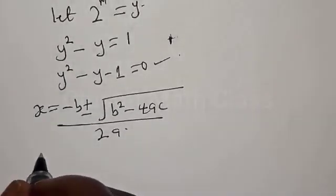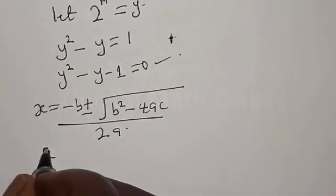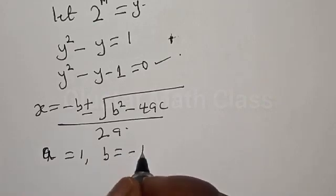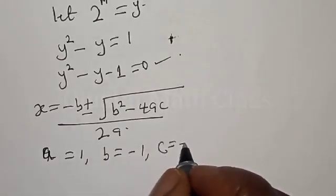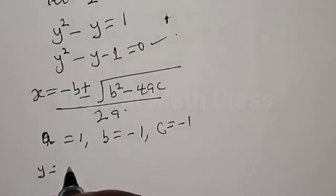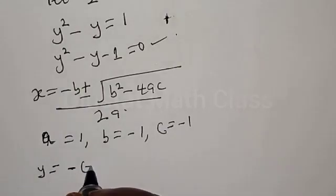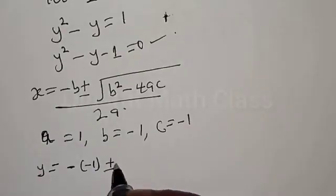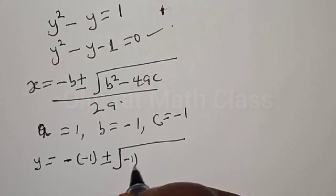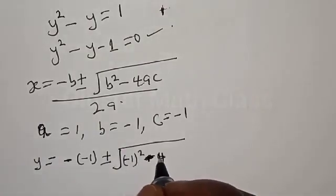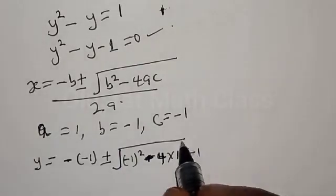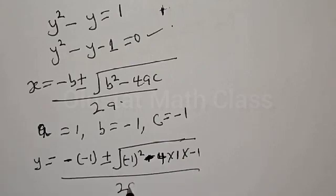Our a equals 1, b equals minus 1, and c equals minus 1. Therefore we have y equal to minus into minus 1, plus or minus square root of minus 1 squared minus 4 multiplied by 1 multiplied by minus 1, over 2a.